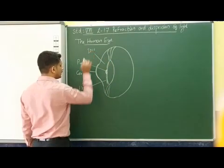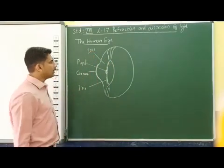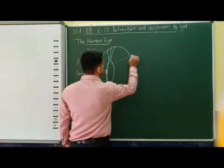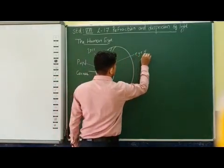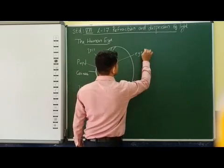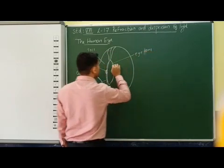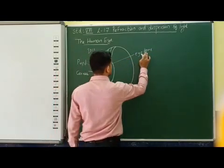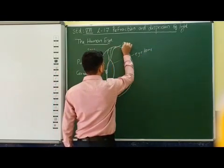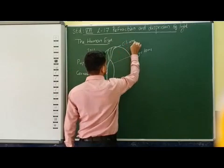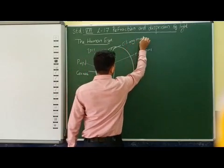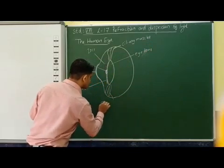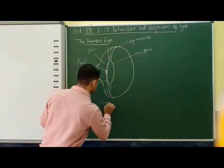You can observe that it is the iris. So this one we can call it as an iris. And this iris is fixed with the help of ciliary muscles. You can observe that these are the muscular regions considered as the iris.